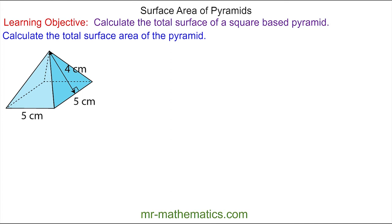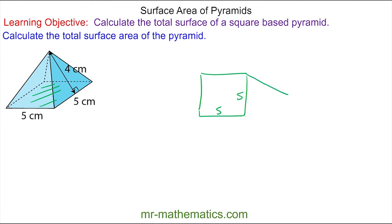Welcome to our lesson on calculating the surface area of a square base pyramid. We're going to begin by drawing the net of this square base pyramid. In the center of the net will be the square, which is five centimeters by five centimeters, and on the edge of each side of the square is a triangle, and you can see the height of the triangle is four centimeters.